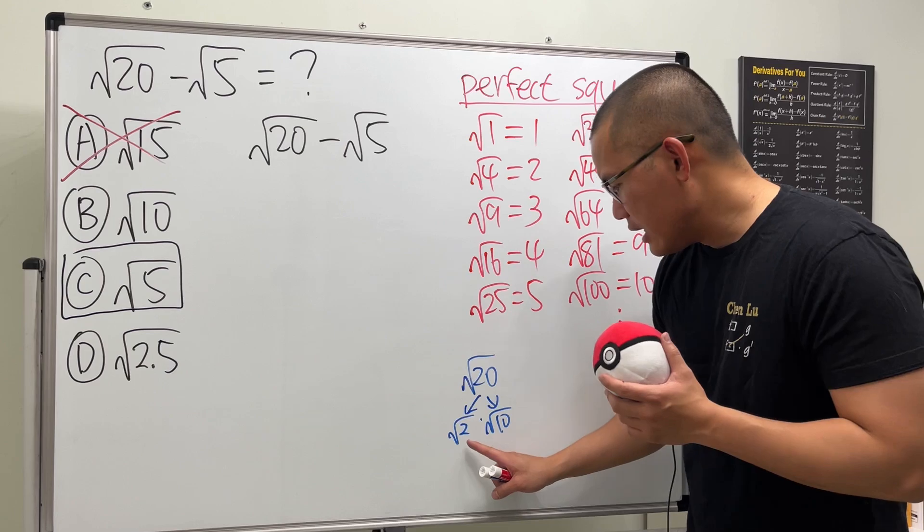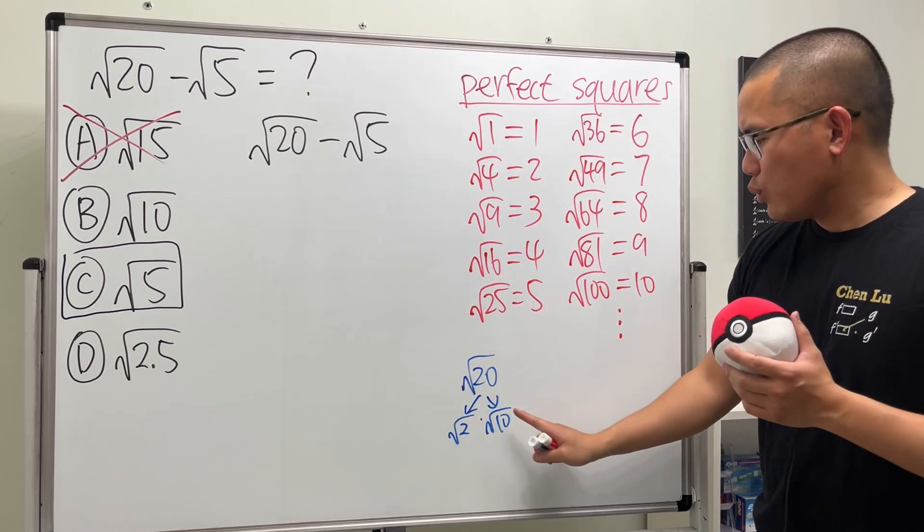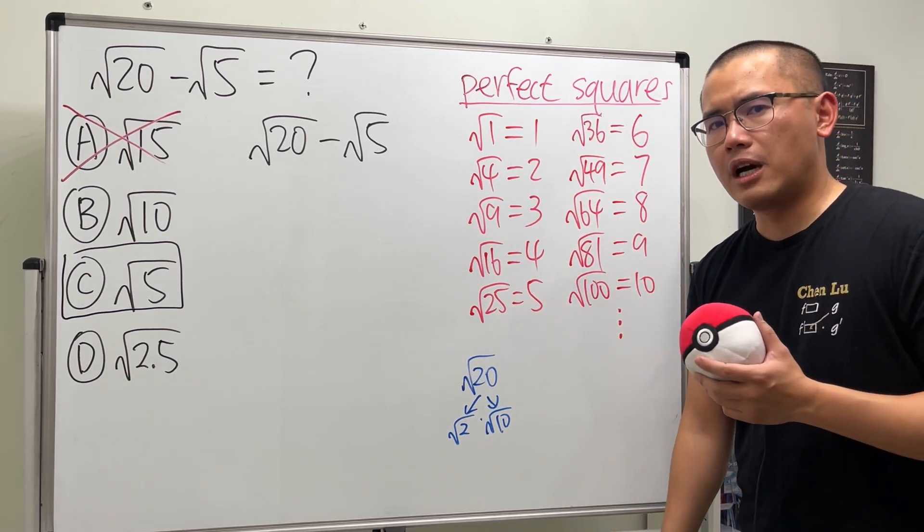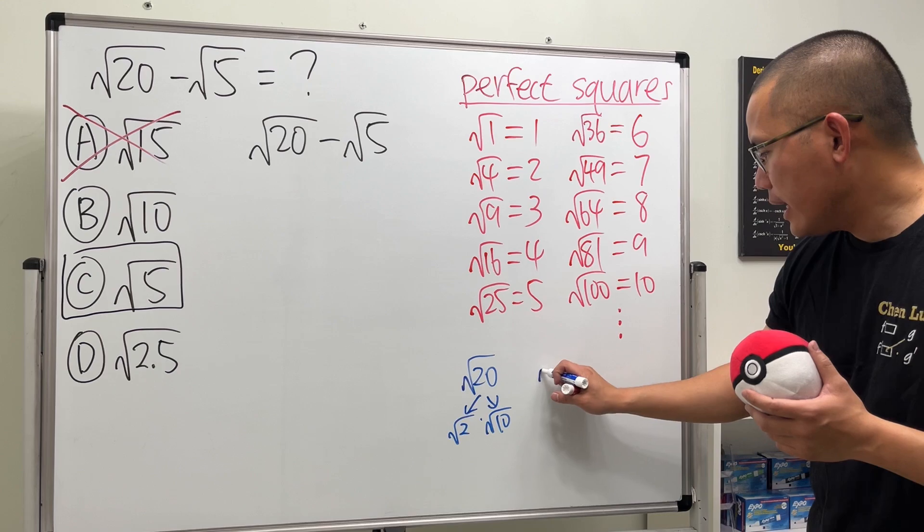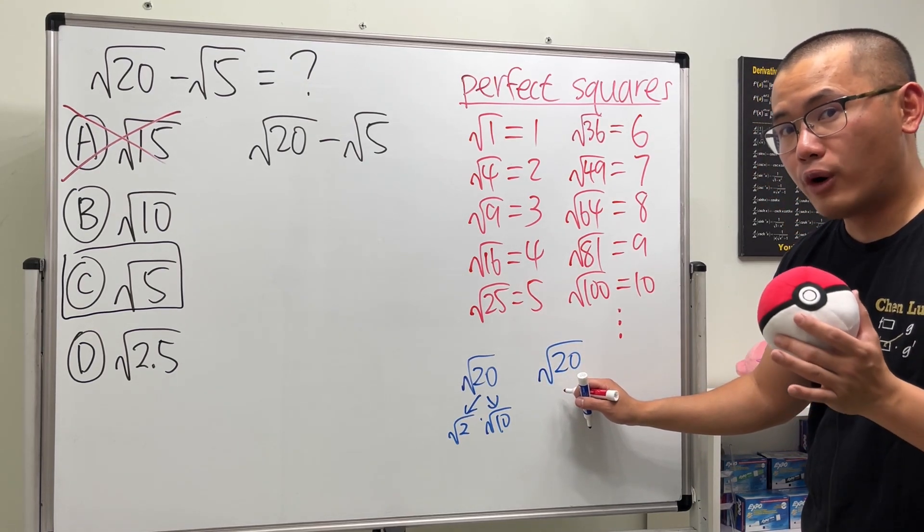But the problem is that square root of 2 right here is not one of these. Likewise, square root of 10 is not one of these. It's not going to be helpful. Instead, we are going to look at square root of 20 as, what? 4 times 5.